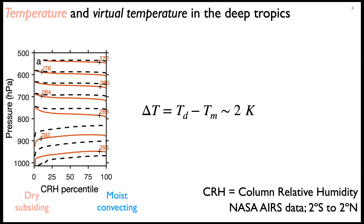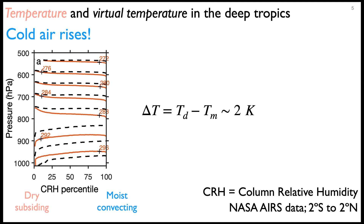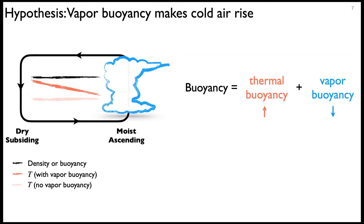Looking at mass observations: I'm showing temperature in red and virtual temperature in black, in pressure coordinates. The x-axis is column relative humidity percentile — on the left is the driest column in the deep tropics, on the right is the most humid column. Virtual temperature is horizontally uniform, but temperature has a tilt. That temperature tilt means cold air rises in the tropical free troposphere. Meanwhile, we find that virtual temperature is pretty horizontally uniform. Why is that? Let's take a look at the physics.